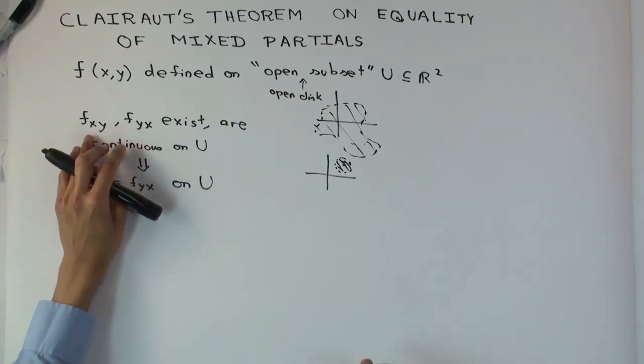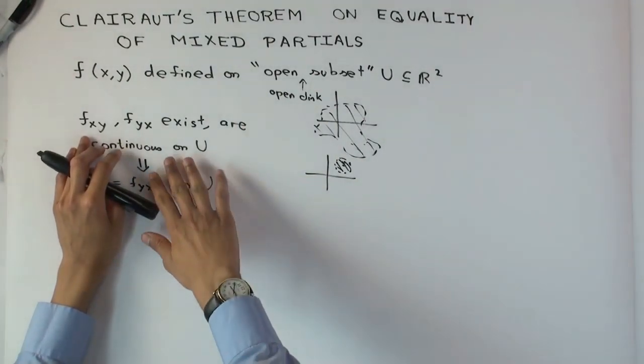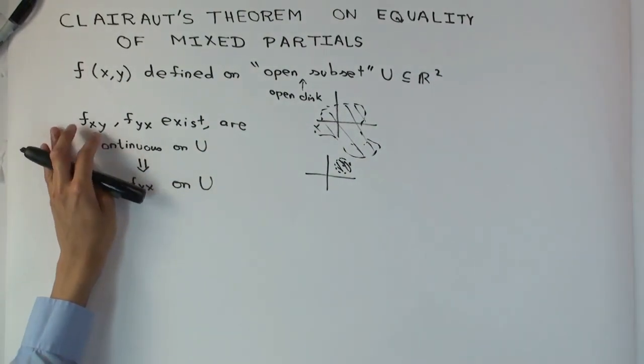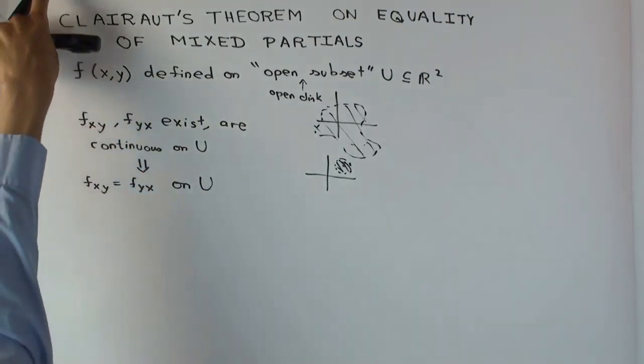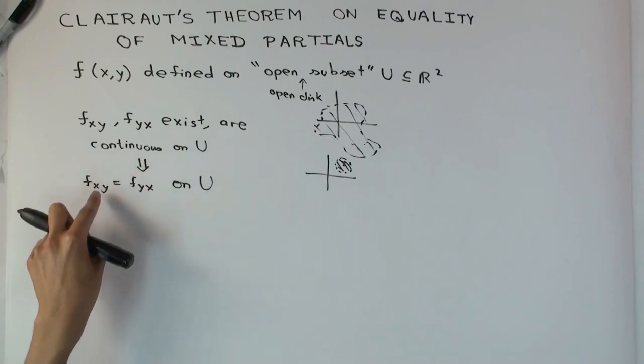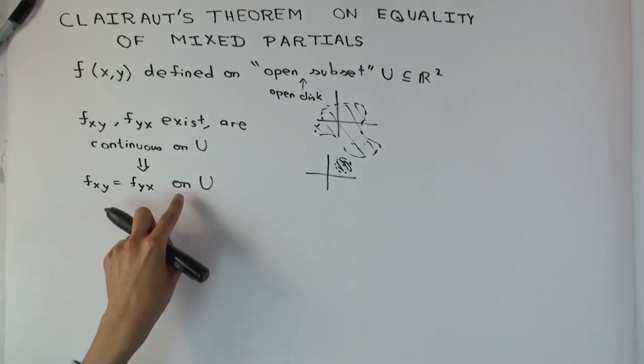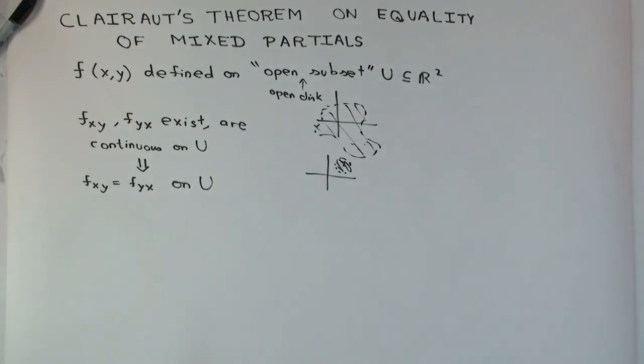Suppose both these mixed partials exist and are continuous functions on U. I'm not defining continuous in this video; it's in other videos. Let's assume both functions are continuous in the usual meaning. Then the claim is that f sub xy and f sub yx will be equal to each other on U. That's what Clairaut's theorem says.